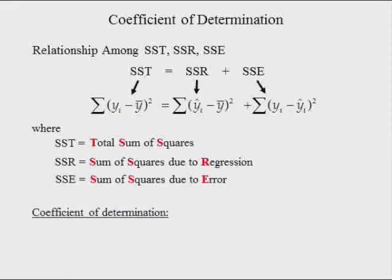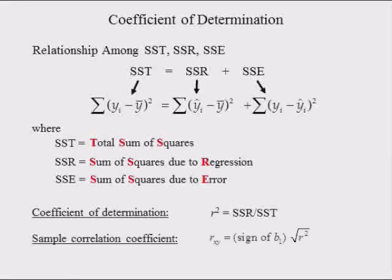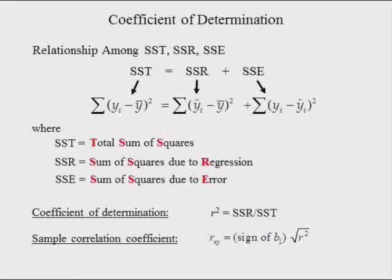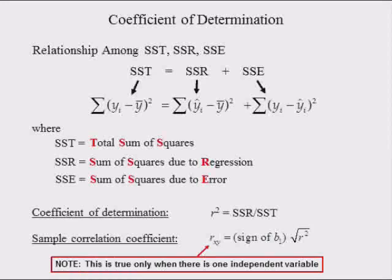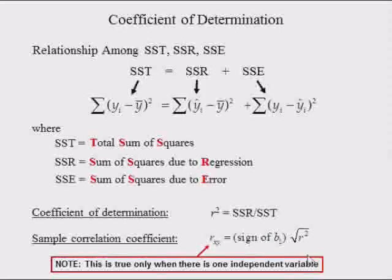The coefficient of determination, denoted R-squared, is equal to the sum of squares due to regression divided by the sum of squares total. The sample correlation coefficient is denoted R subscript XY and is equal to the slope of the estimated regression equation B1 times the square root of the coefficient of determination R-squared. Note that this is only true when there is only one independent variable, as in Chapter 14, and is no longer true in Chapter 15 when there are many independent variables.